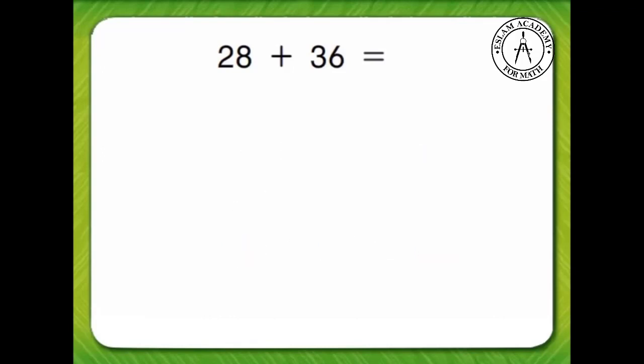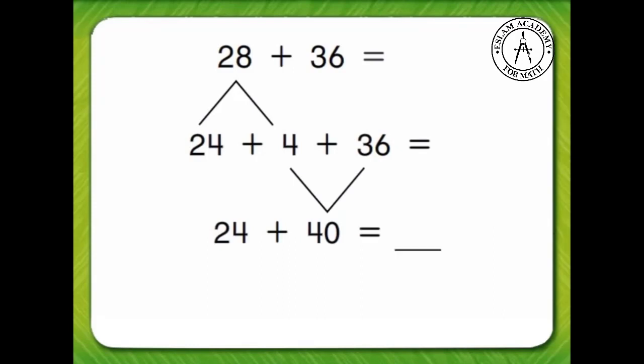Another way to add 28 and 36 is to break 28 into 24 plus 4. Then make 4 plus 36 into 40. Now add 24 and 40. 24 plus 40 equals 64. So, 28 plus 36 equals 64.